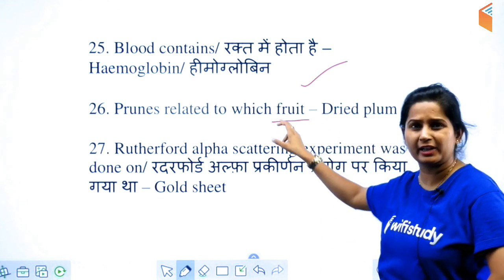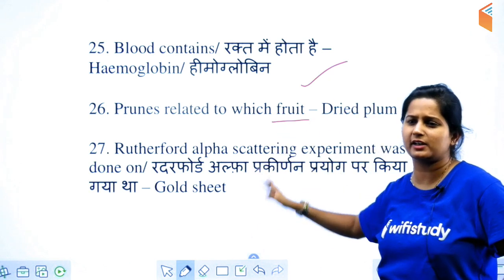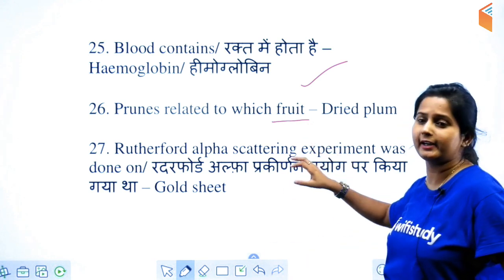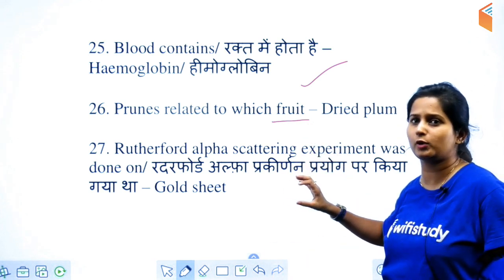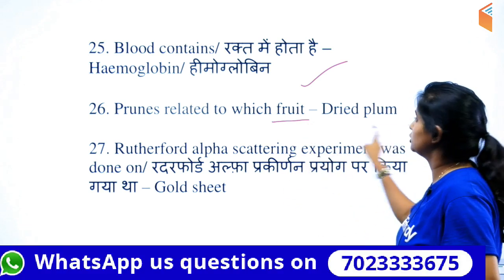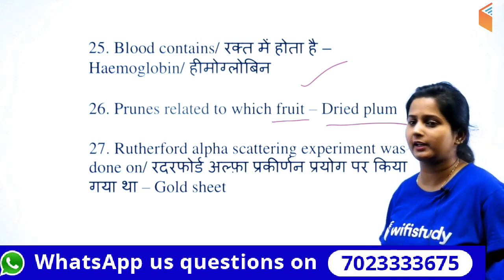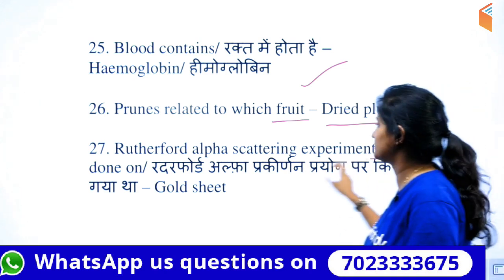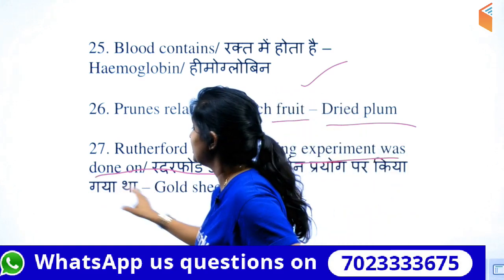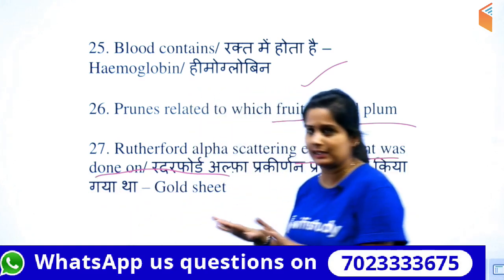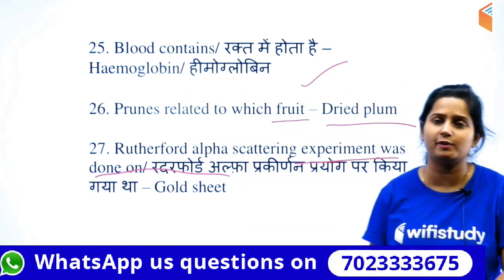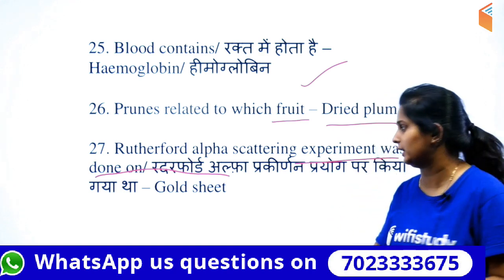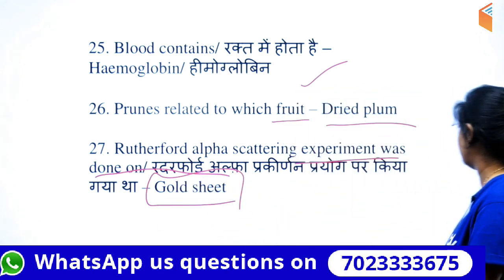Prunes are related to which fruit? These are a little difficult — botany. Remember, prunes are a dried plum. Rutherford's alpha scattering model — what was the question? Remember the answer: gold sheets.